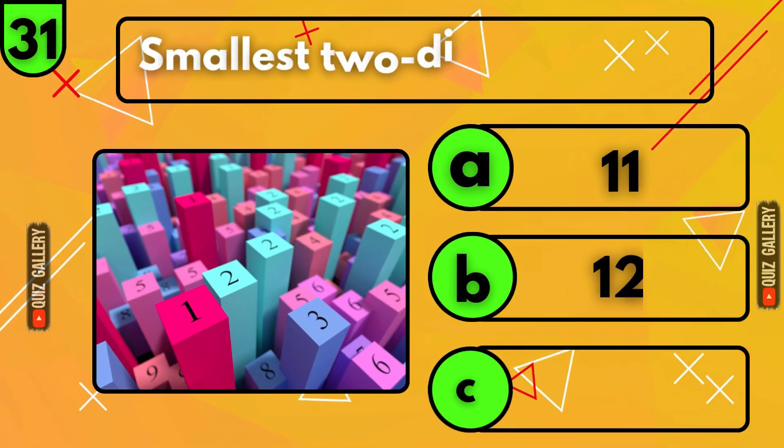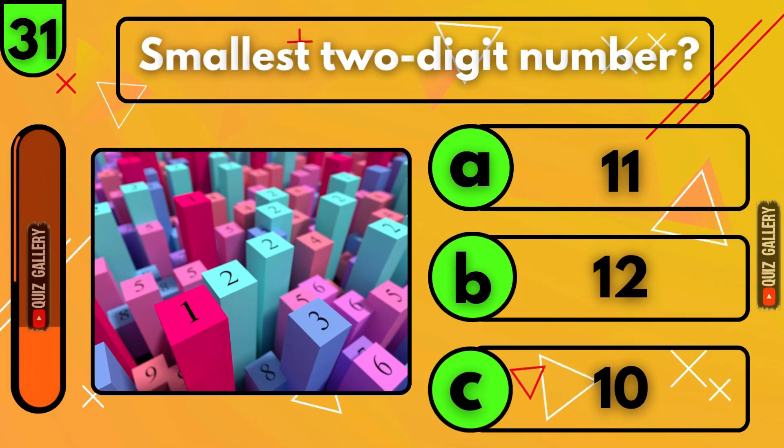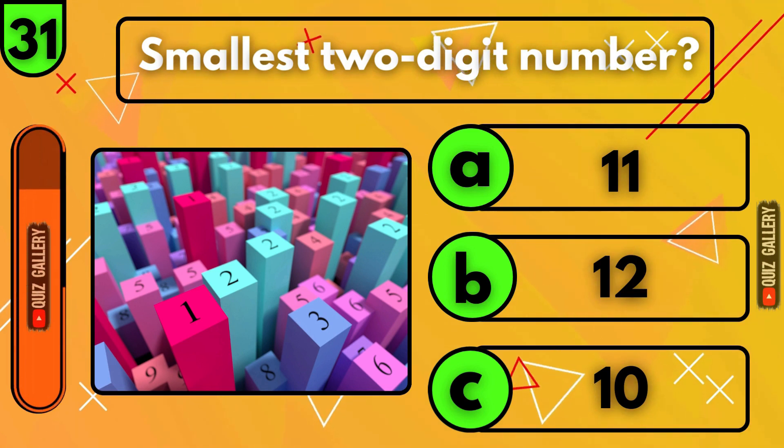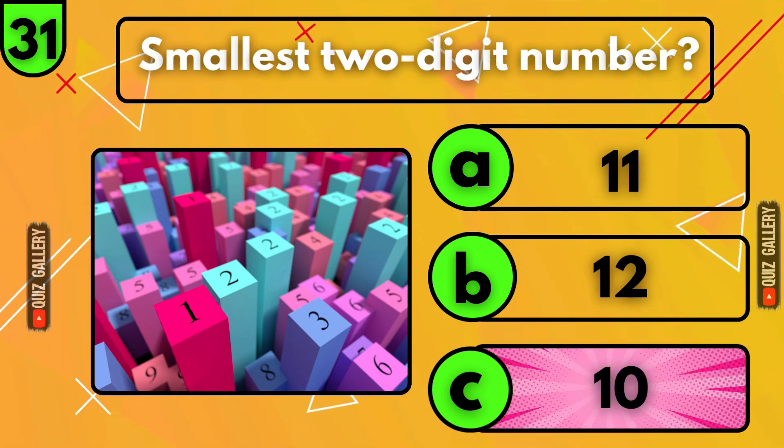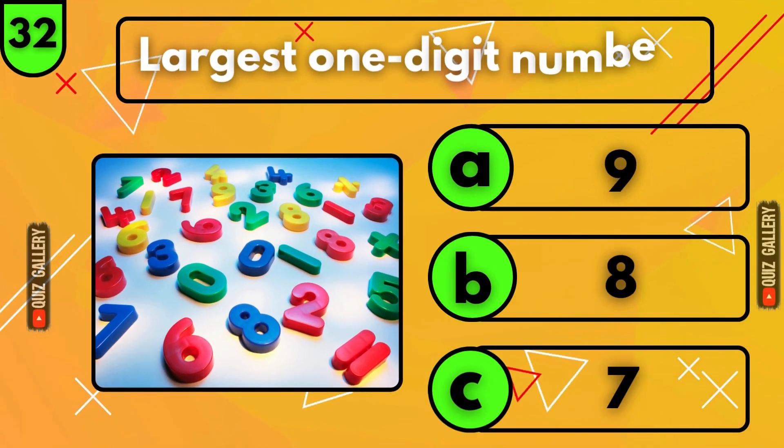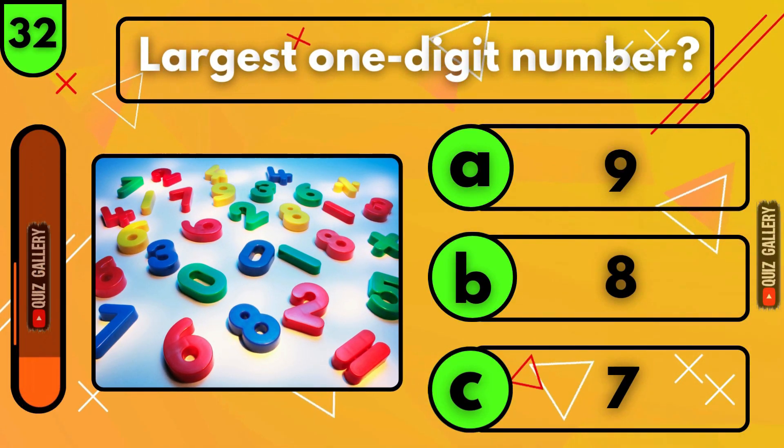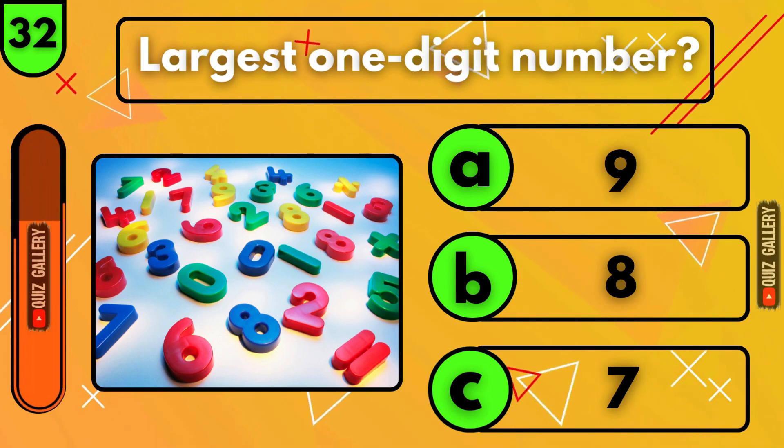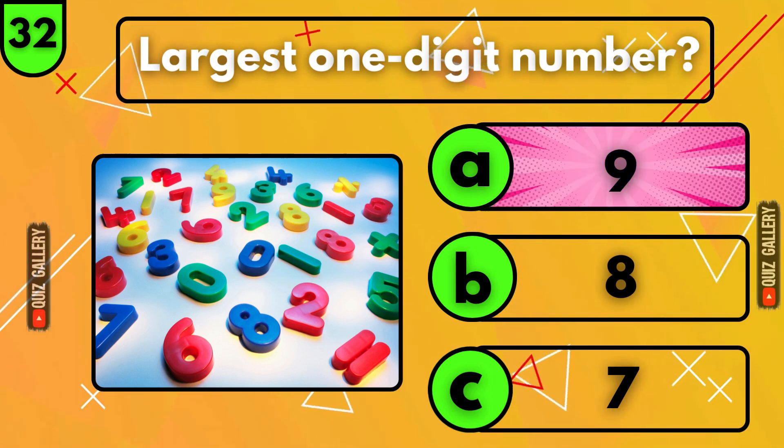What is the smallest two-digit number? It's 10! What is the largest one-digit number? It's 9!